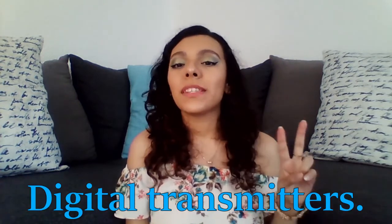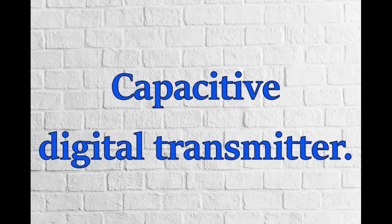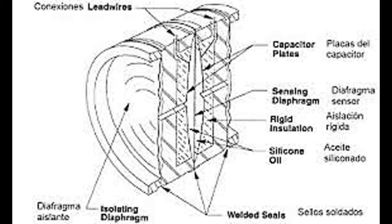There are two basic models of intelligent digital transmitters. The first is the capacitive model, which is based on the variation in capacitance produced in a condenser that has two fixed plates joined by an internal diaphragm that move when pressure is applied to external diaphragms. The pressure transmission occurs through oil, which fills the condenser.